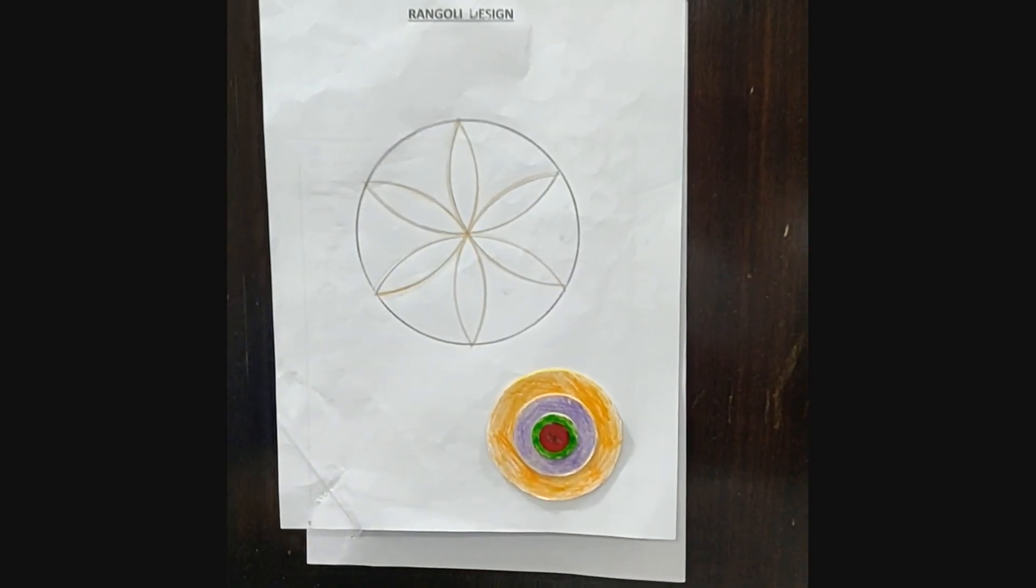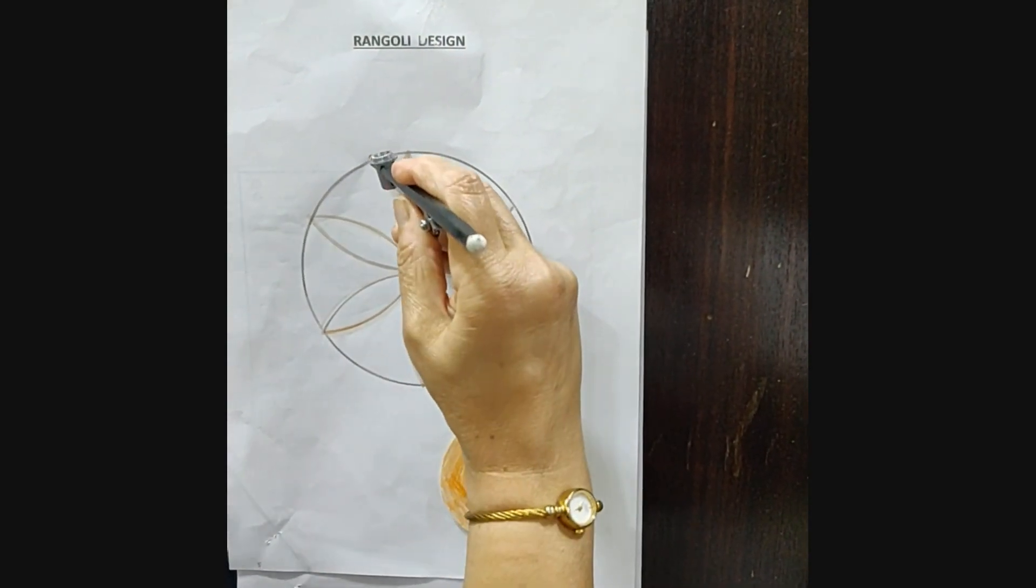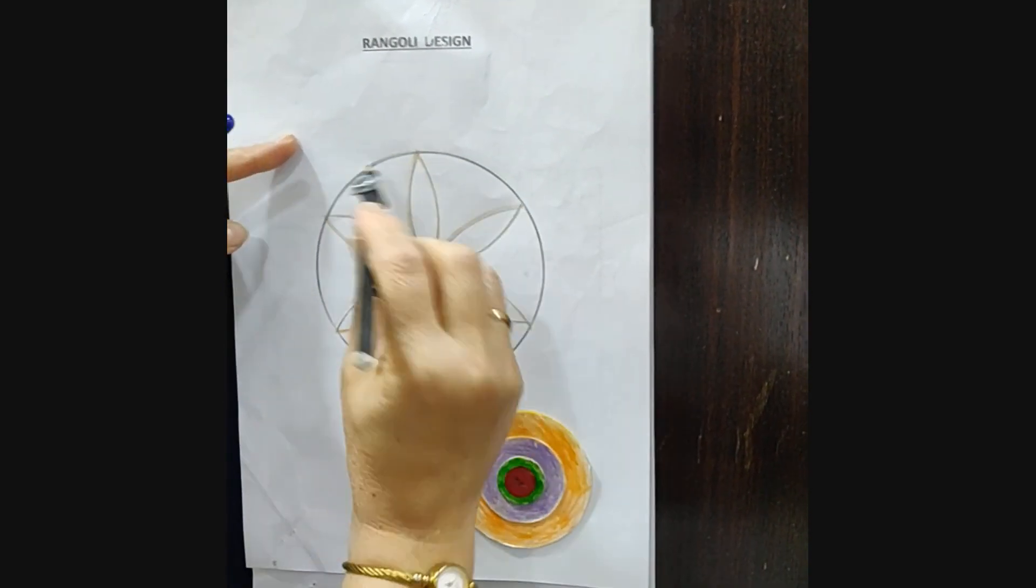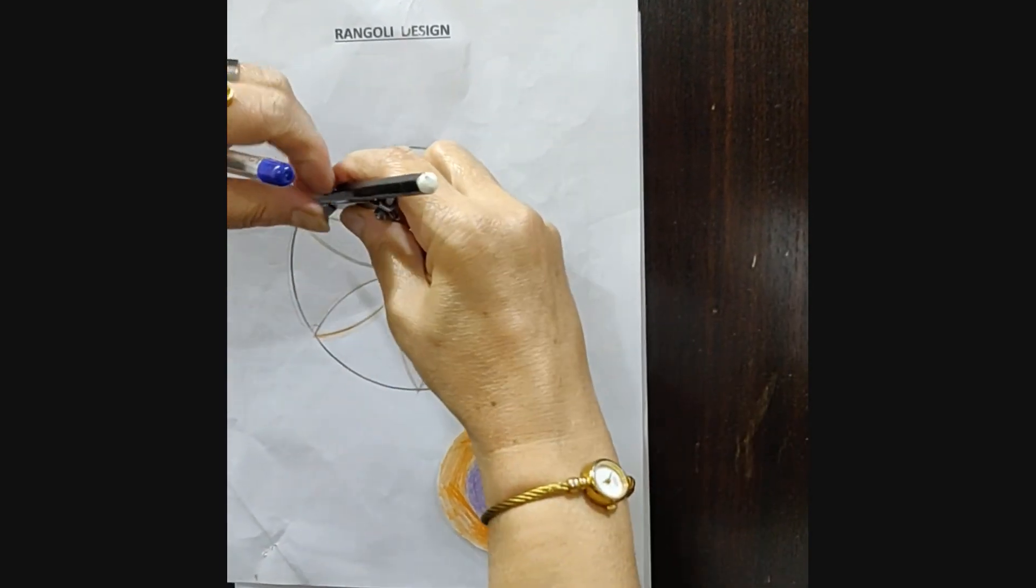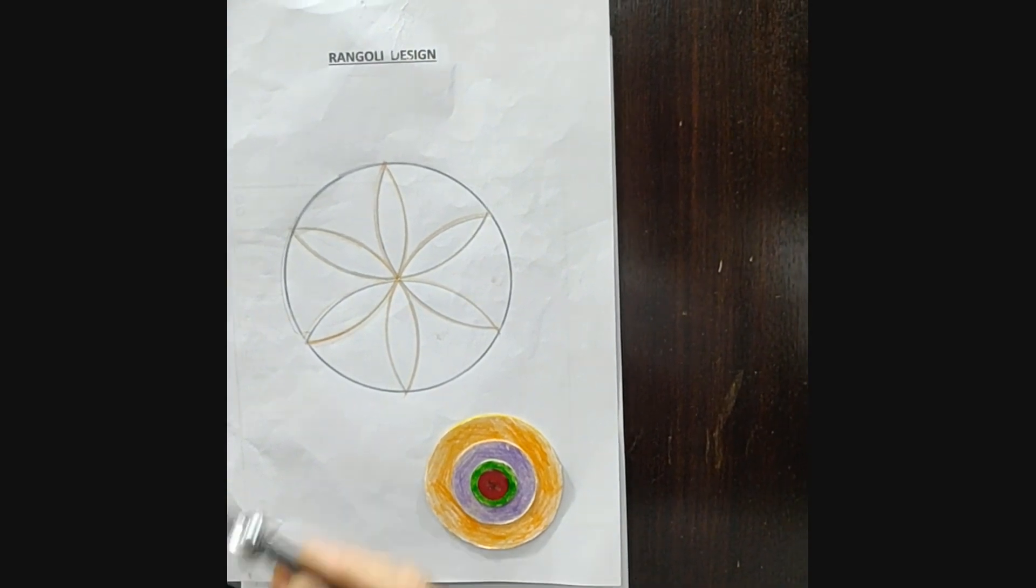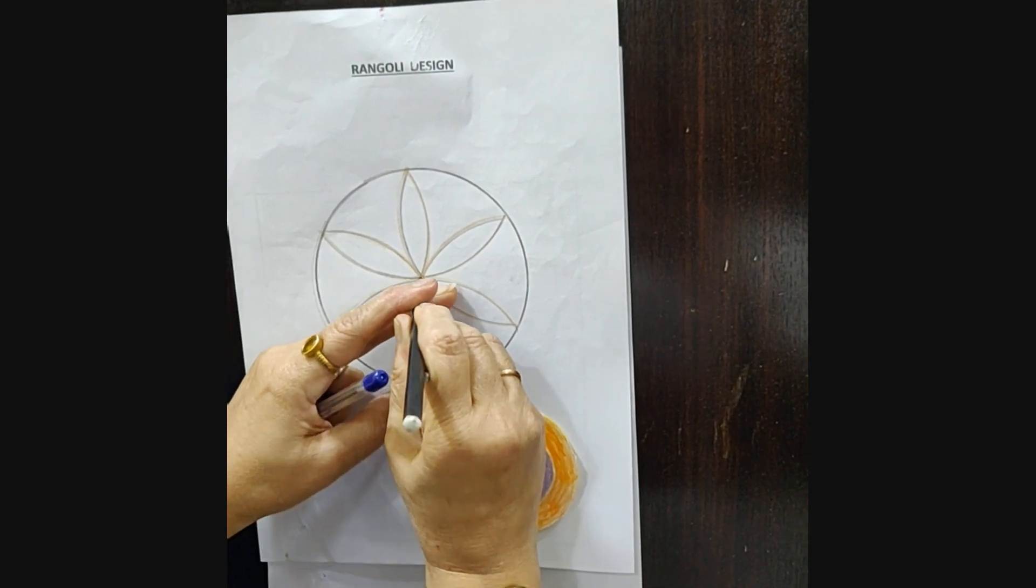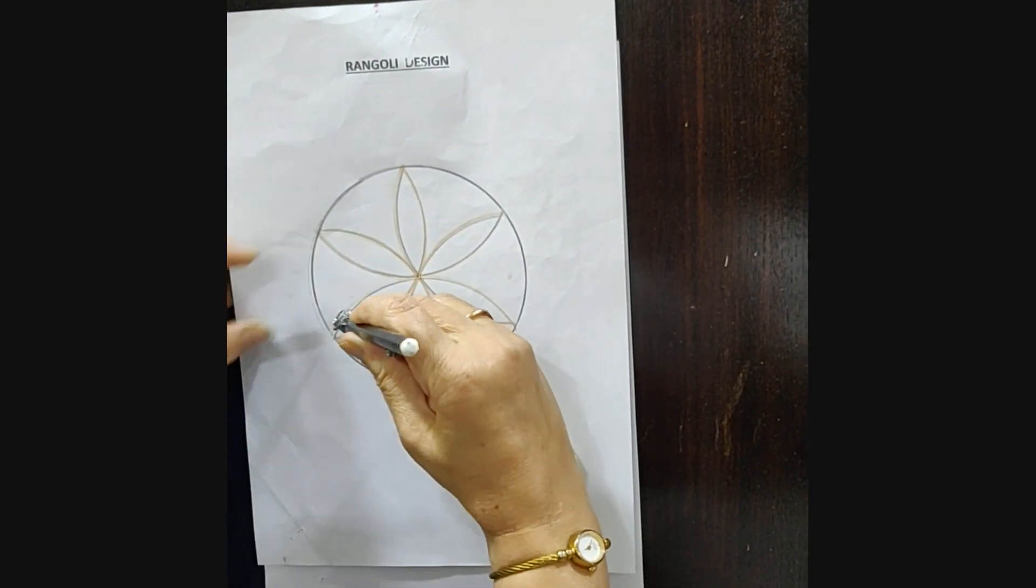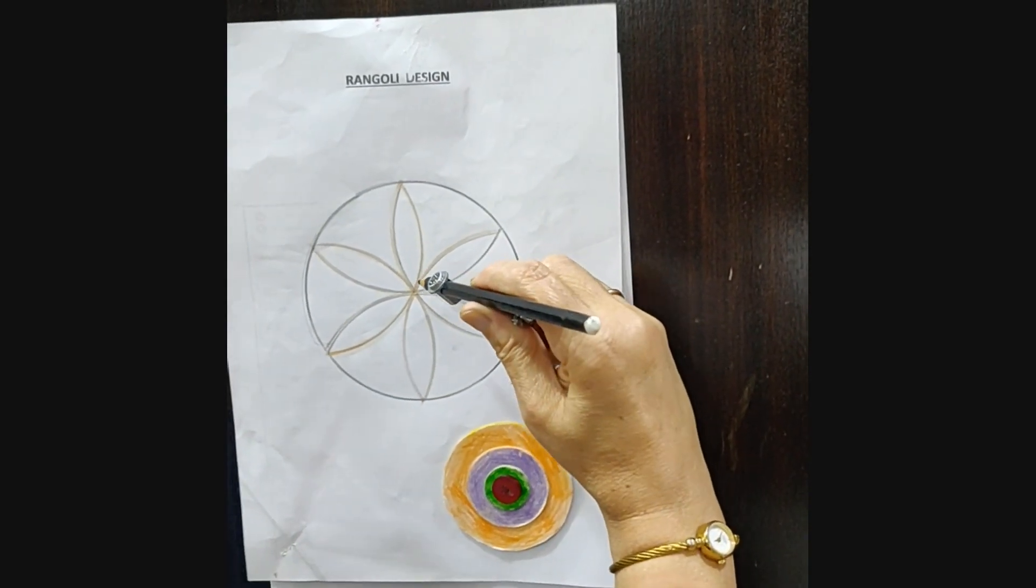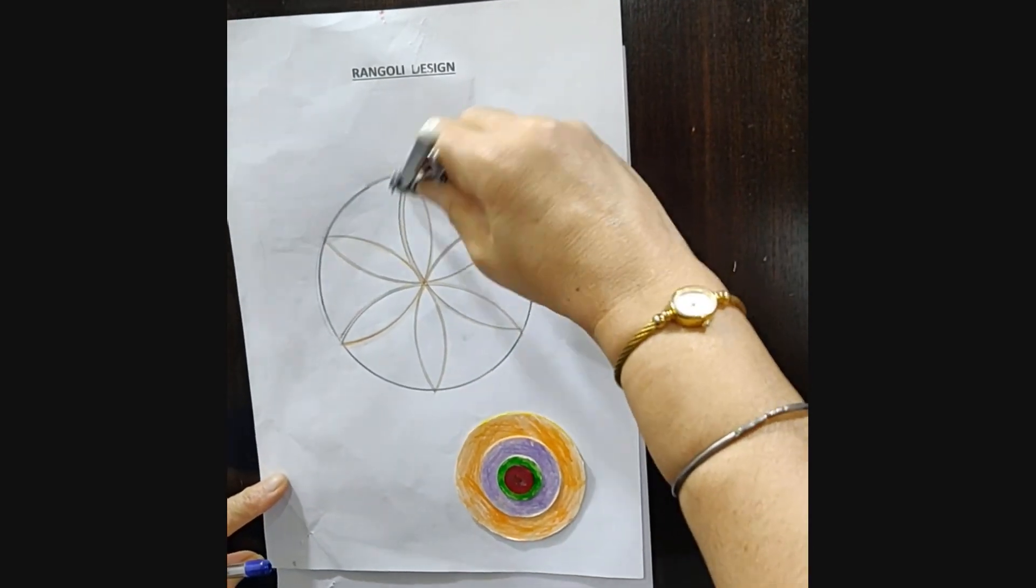Now with the help of compass, we can draw our Rangoli design. First of all, you will draw a circle, which I have made already. Then you will make a design. Put anywhere on the circle and make arc. You will get a beautiful design. This way you can draw a beautiful Rangoli design.